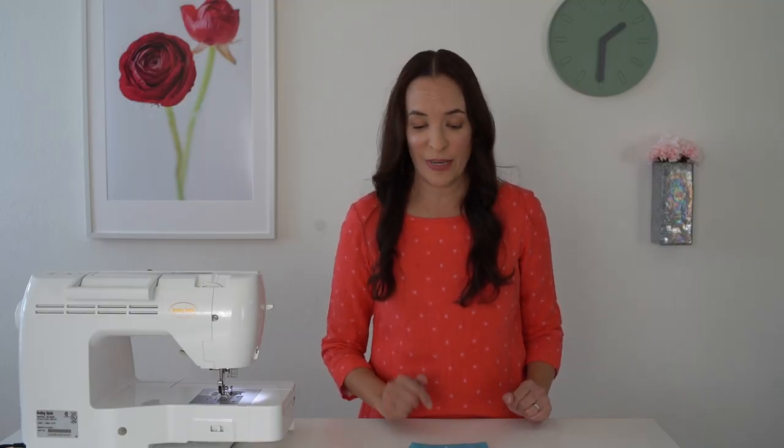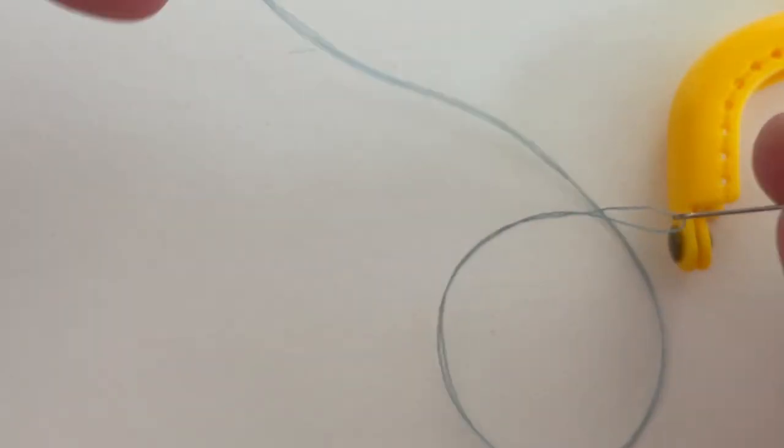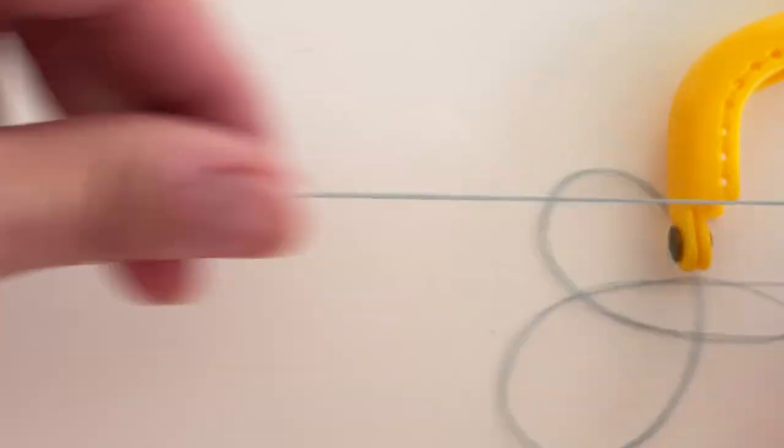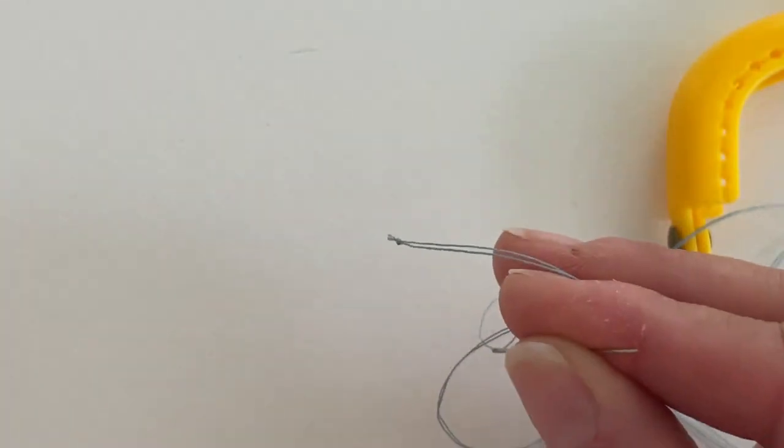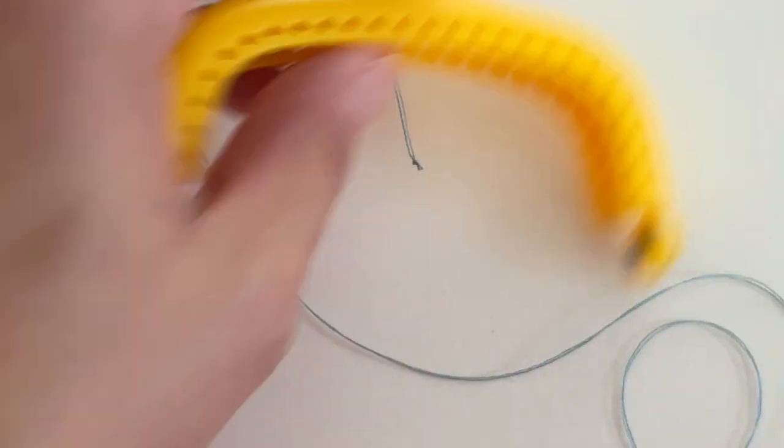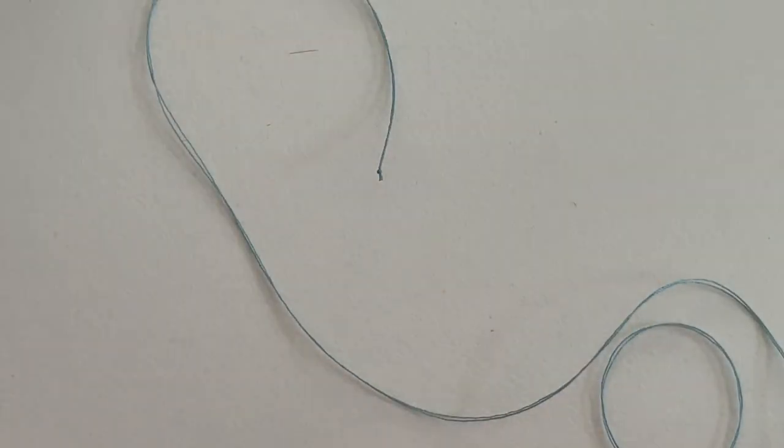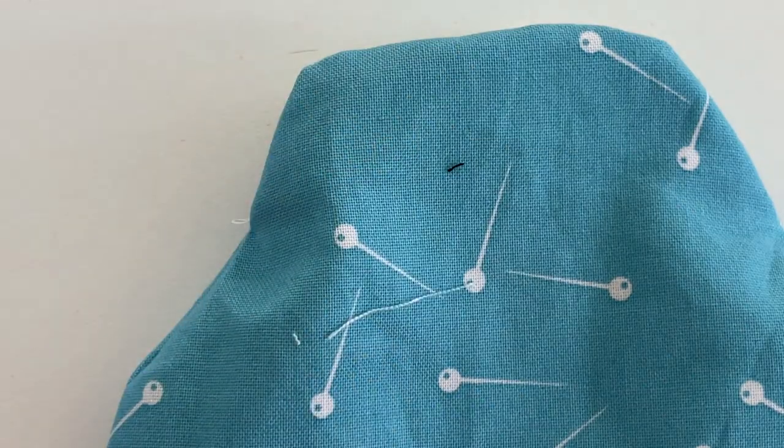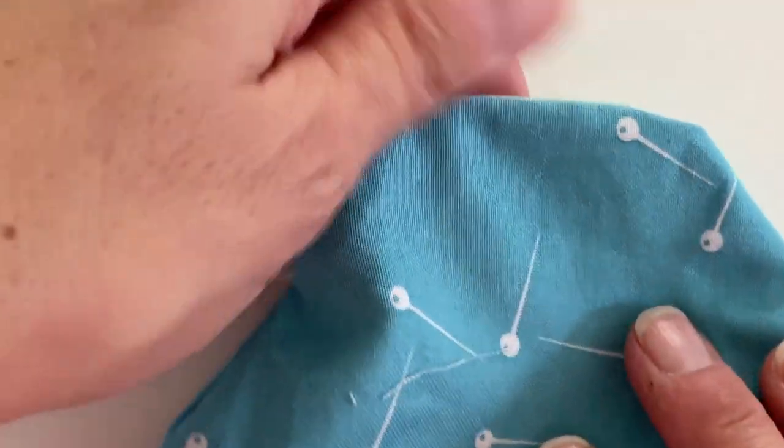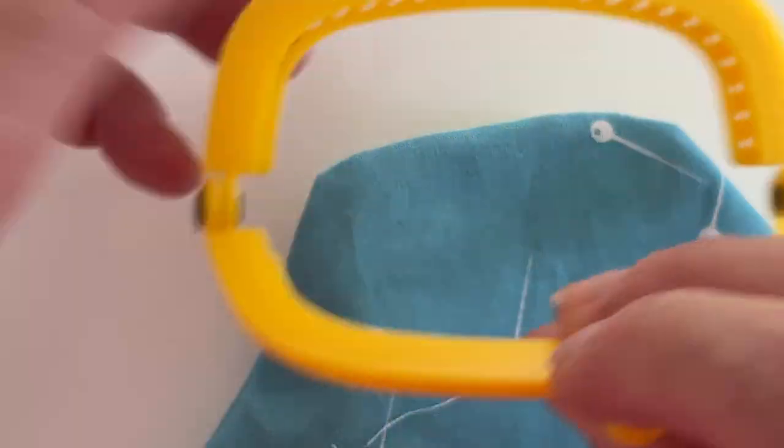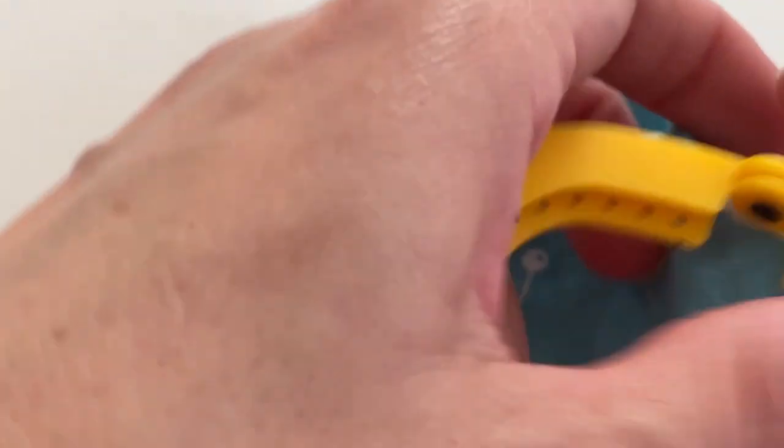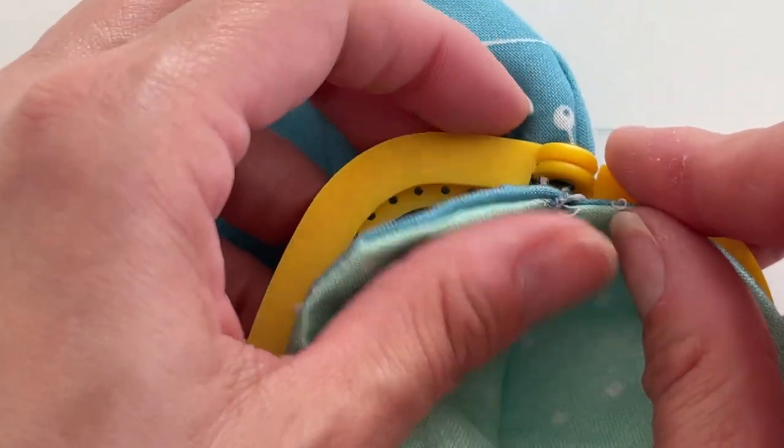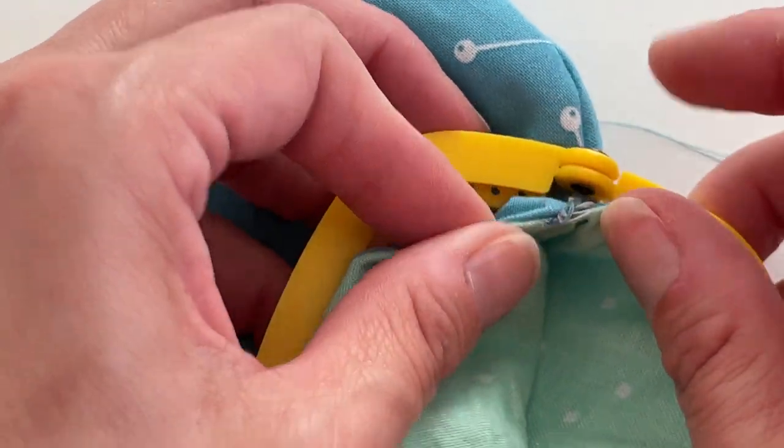Okay y'all, for this part, we are going to need a hand-sewing needle. Double your thread through it, and then knot the ends together. You're also going to need your purse frame, and then here's your purse. So what I'm going to do here is I'm going to open the purse frame, and I'm going to start at a corner, and I want to line the corner up with the corner of my frame.